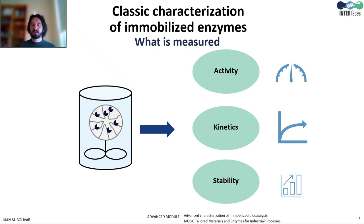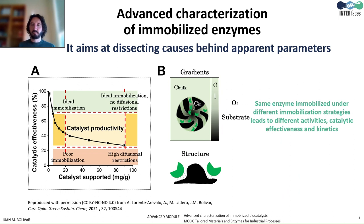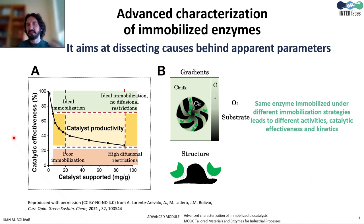From a classic perspective, there are mainly three aspects that are measured when an immobilized enzyme is characterized: one is the activity, second is the kinetics of the immobilized enzyme, and third is the stabilization. However, any functional parameter of the immobilized enzymes is going to be the result of a complex interplay of different underlying phenomena. For example, if we think in terms of activity and catalytic effectiveness, there are different causes behind that are determining a specific number.